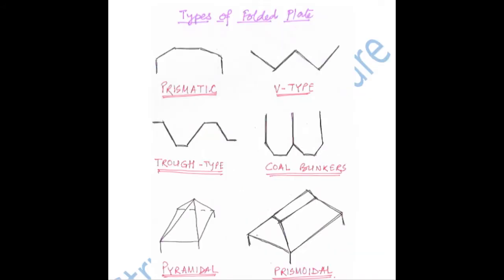Here are a few examples of the types of folded plates: prismatic, V-type, trough type, coal bunkers, pyramidal, prismoidal. This may also appear in GATE questions — a diagram may be given and you have to identify which type of folded plate structure it is. So it is important to know the names of the different types of folded plates.